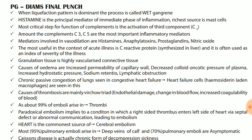Mediators involved in vasodilation are histamines, anaphylatoxins, prostaglandins and nitric oxide. The most useful marker in the context of acute illness is C-reactive protein, synthesized in the liver, and it is often used as an index of severity of the illness. Granulation tissue is highly vascularized connective tissue.